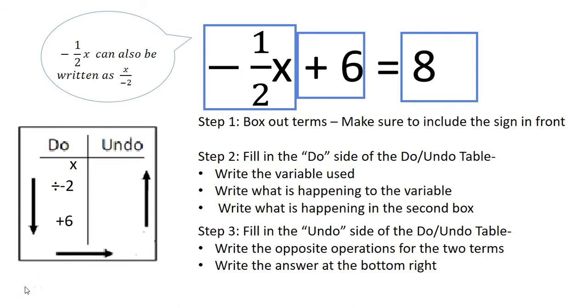We will then move to the Undo side and undo the division of the negative 2 with the multiplication of negative 2. And then add 6, which subtracts 6. The answer 8 will just go on the bottom right again.